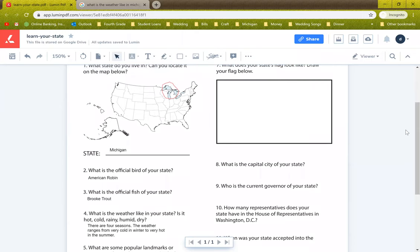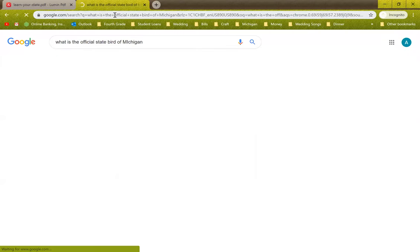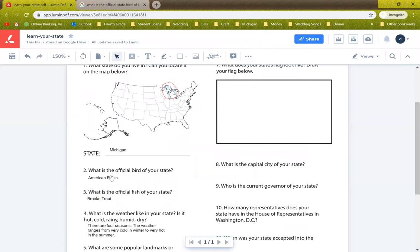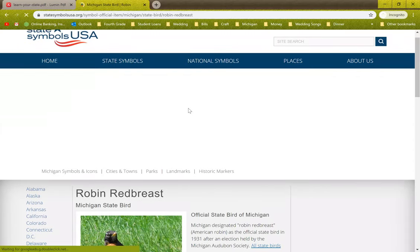So I went ahead and I answered a couple of them already. What is the official bird of your state? I am using the internet to research and you can use your phone, your iPad or your tablet, whatever device you want. You can even use a book if you have any books on Tennessee. So what is the official bird of Michigan? Right there we have it, the American Robin, and that's what I've written on my sheet of paper. But when you're doing research you're gonna dig a little bit deeper. See if you can find out some more information about those questions.